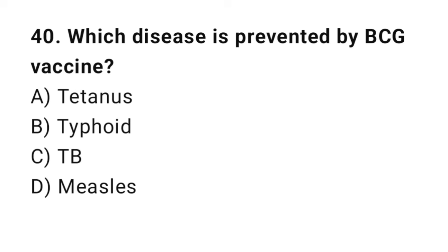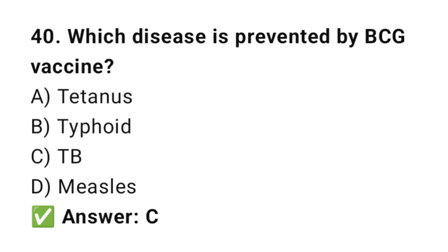Q40: Which disease is prevented by BCG vaccine? The right answer is C, TB. The BCG vaccine is given to prevent tuberculosis.